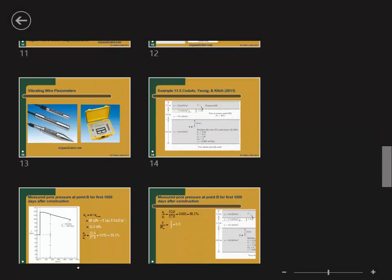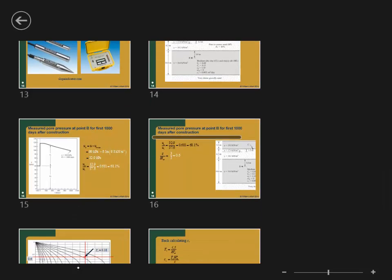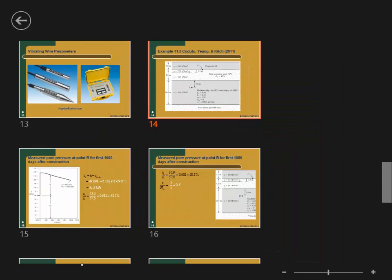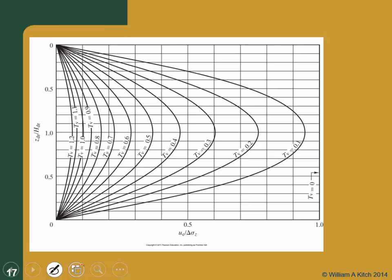Now jumping ahead to where we actually do the solution. This is the compressible layer and we place our piezometer there. Why not place it right in the middle of the clay layer? Because if we look at our isochrones, the middle doesn't give much pore pressure change over time. We want a place with significant pore pressure dissipation. We also don't want the top, because pore pressure is always zero there.